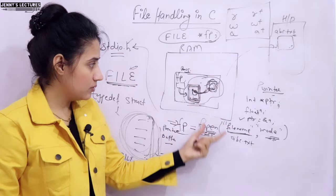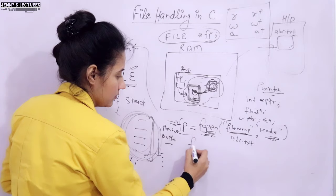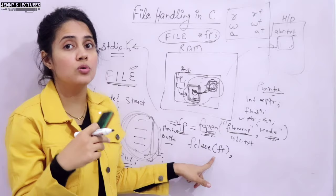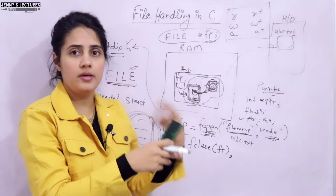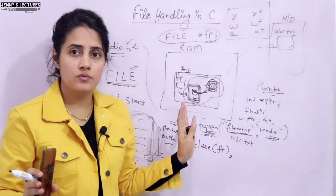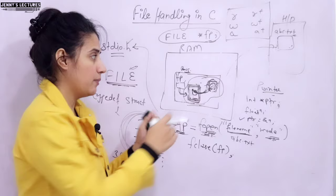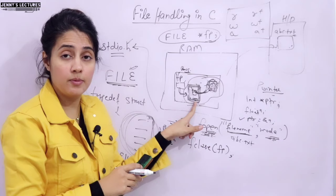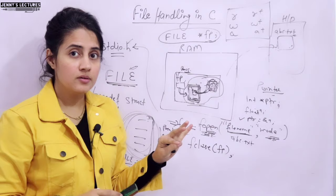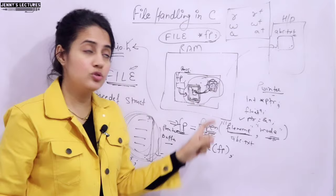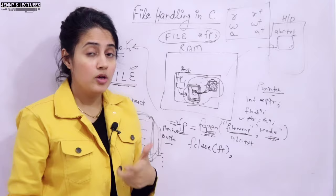After doing whatever you want with the file, you are supposed to close it using fclose, passing the file pointer fp. This is very important: if you open a file and use it, it is your responsibility to close it. Once closed, the buffer memory and the FILE variable memory are released, and that file can be used by any other pointer or process.